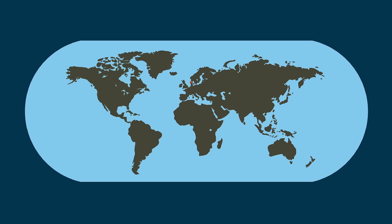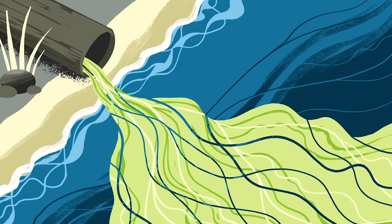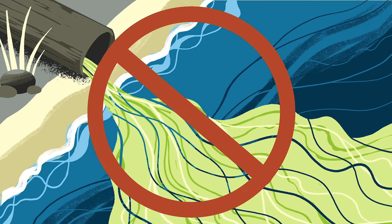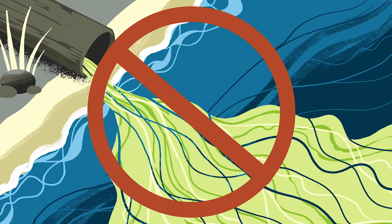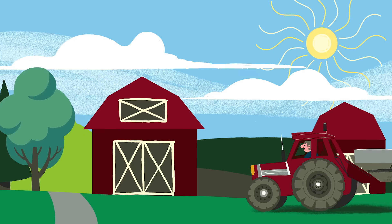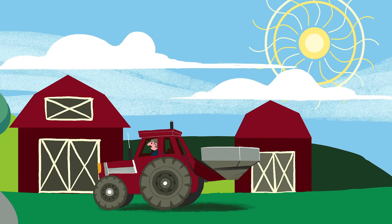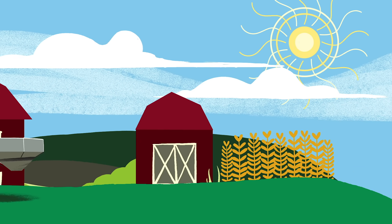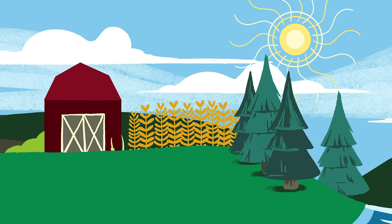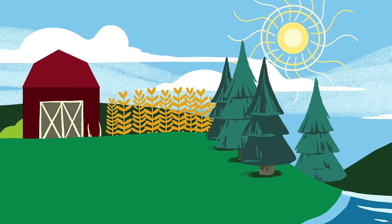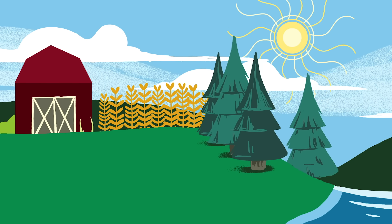Human activity is similarly responsible for growing dead zones around the world. So what can be done? In the short term, countries can set tighter regulations on industrial runoff and ban the dumping of untreated sewage into ocean waters. On farms, we can plant buffer zones composed of trees and shrubs to absorb runoff.